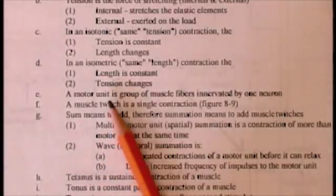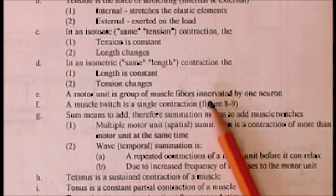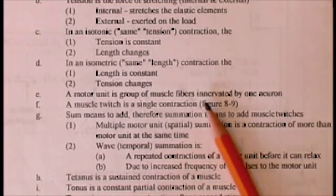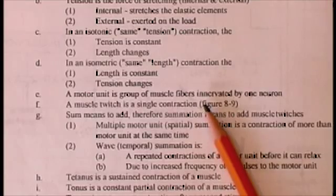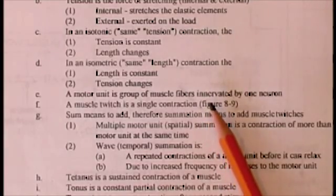So the motor unit is a group of muscle fibers innervated by a single neuron. And a motor unit will either contract or it won't. So it contracts all the way to its maximum extent or it does not contract at all.